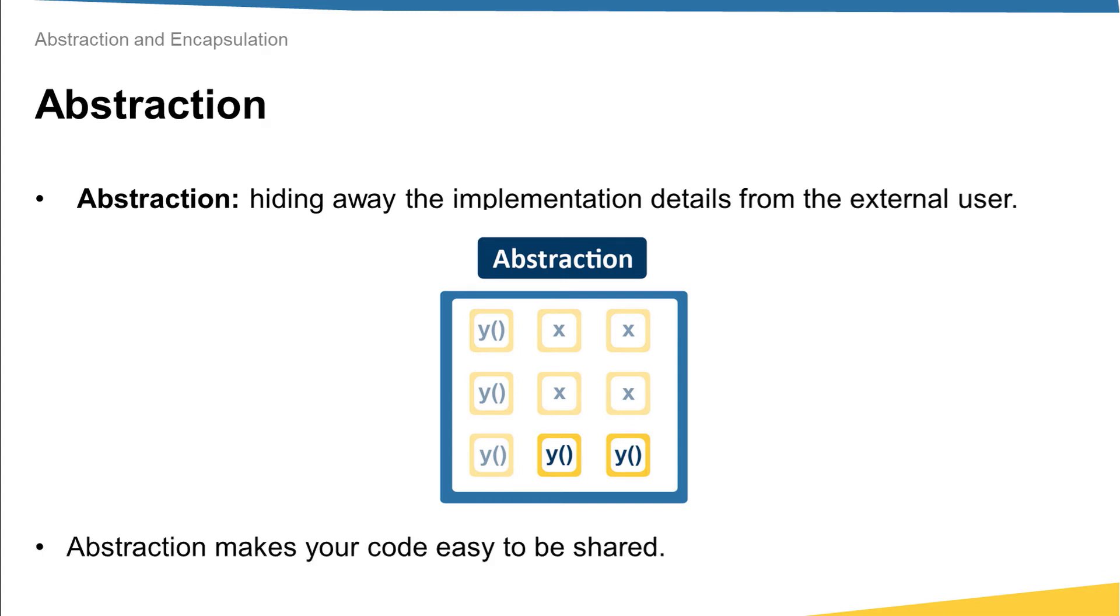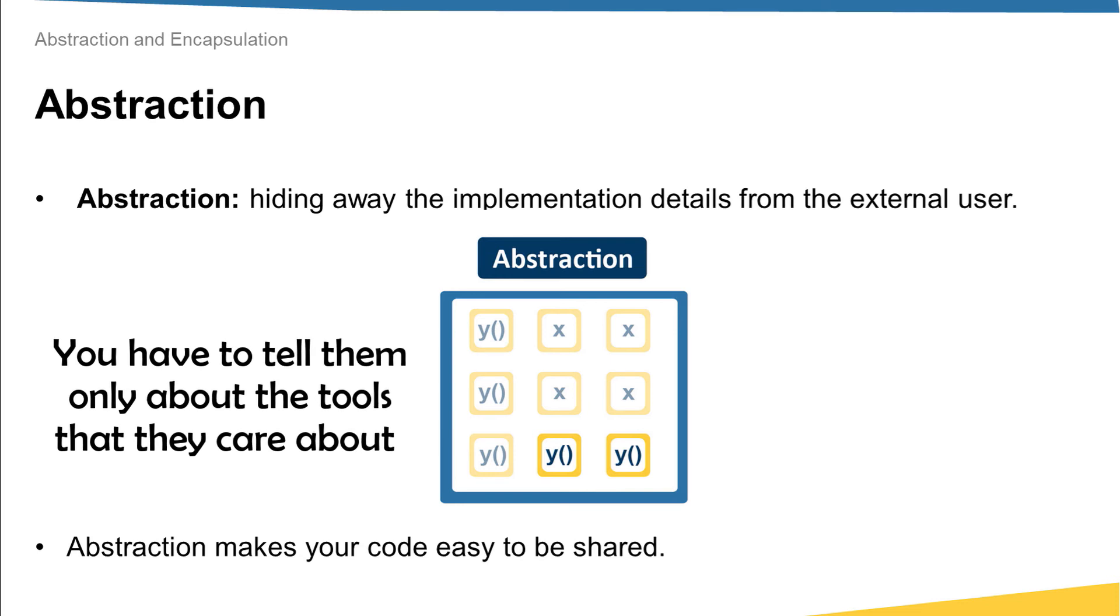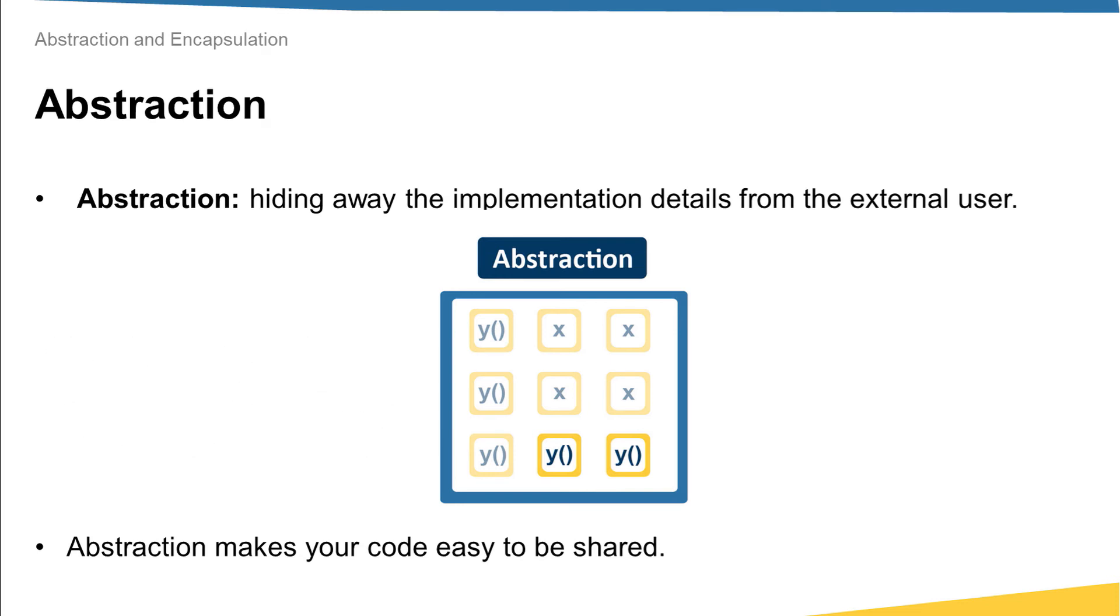We can say that abstraction makes your code easy to be shared. Why? Because when you want to share your code with other people, you have to tell them only about the tools that they care about, and everything behind these tools they should not know anything about. People will care about how to use the class, but they don't care about the actual implementation.